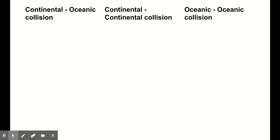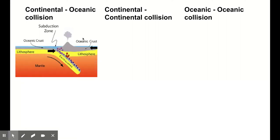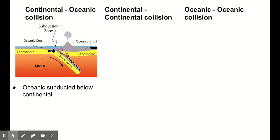Our first type of convergent plate boundary is our continental-oceanic collision — we've got a continental plate colliding with oceanic crust. In this case, the oceanic crust, because it's waterlogged, is always going to be denser. So it will be subducted below the continental crust. Subduction means it moves underneath — the zone where the denser plate moves underneath the less dense plate is called the subduction zone.